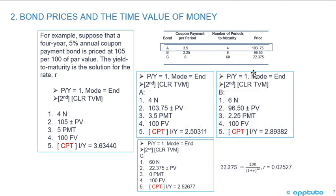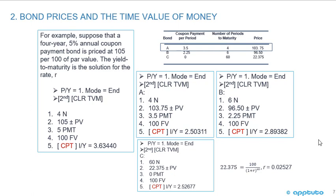The table from the text provides the coupon payment per period, number of periods to maturity, and price, assuming future value of 100, and shows the calculated I/Y yield for various scenarios. Now let's finish this LOS with a couple of practice questions on calculating price and yield.